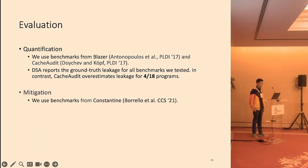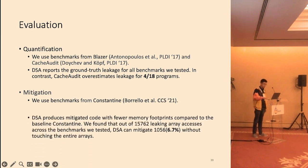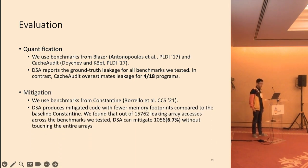On the mitigation side, we also use the benchmark from prior work Constantine. DSA reports produce mitigated code with fewer memory footprint compared to the baseline Constantine. We found that out of all the leaking memory accesses across all the benchmarks we tested, DSA can mitigate 6.7% without touching the entire array, while Constantine touches the entire array to mitigate the leakage.